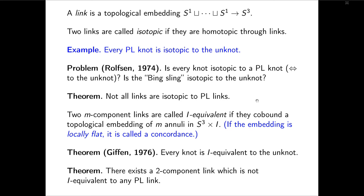There are more things to say — Milnor invariants don't help, new invariants and various other things — but I want to focus on the proof. The proof is going to be a series of examples which build on one another, and in the end we get an example which proves the theorem. The idea of the proof is to extend Cochrane's derived invariants to topological links. The proof is quite simple and it is surprising that nobody has done it before.